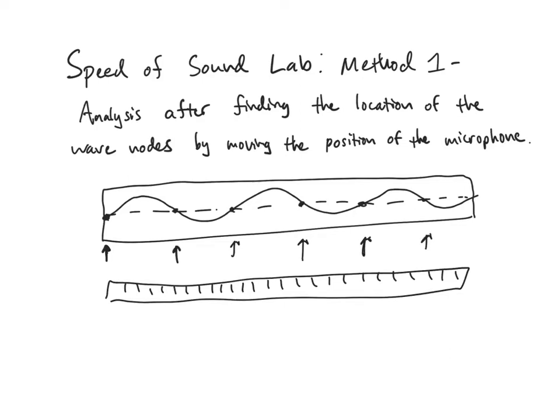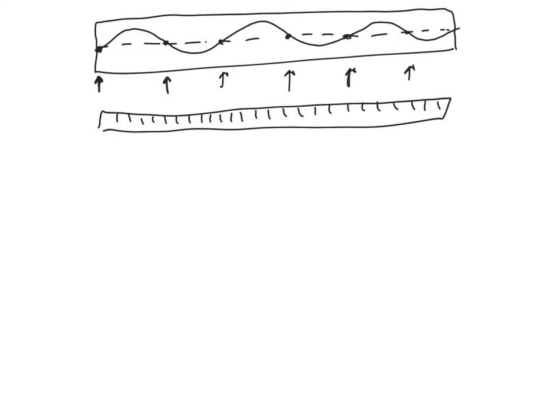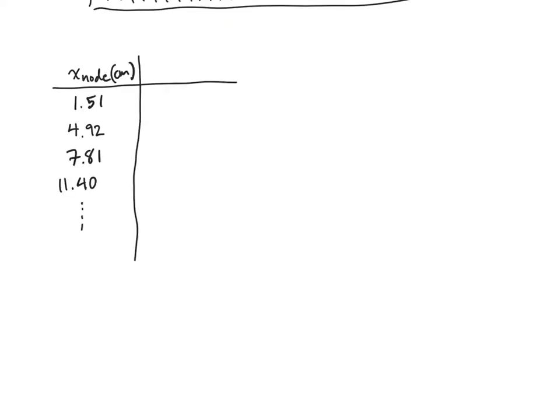Skipping ahead here, I have put all of those locations of the nodes into a spreadsheet, into a column. The units are centimeters. Over here in this column I'm going to write down delta x node, which is going to be the distance from a given node to the one previously.